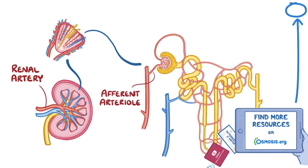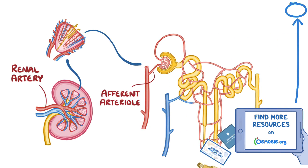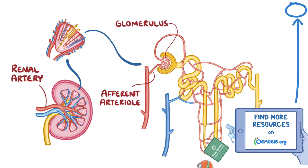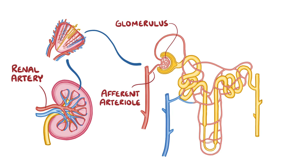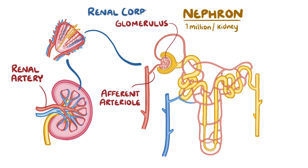Blood from the renal artery flows into smaller and smaller arteries, eventually reaching the tiniest arterioles called the afferent arterioles. After the afferent arteriole, blood moves into a tiny capillary bed called the glomerulus. The glomerulus is part of the functional unit of the kidney called the nephron. There are about a million nephrons in each kidney, each consisting of a renal corpuscle made up of the glomerulus and the surrounding Bowman's capsule.